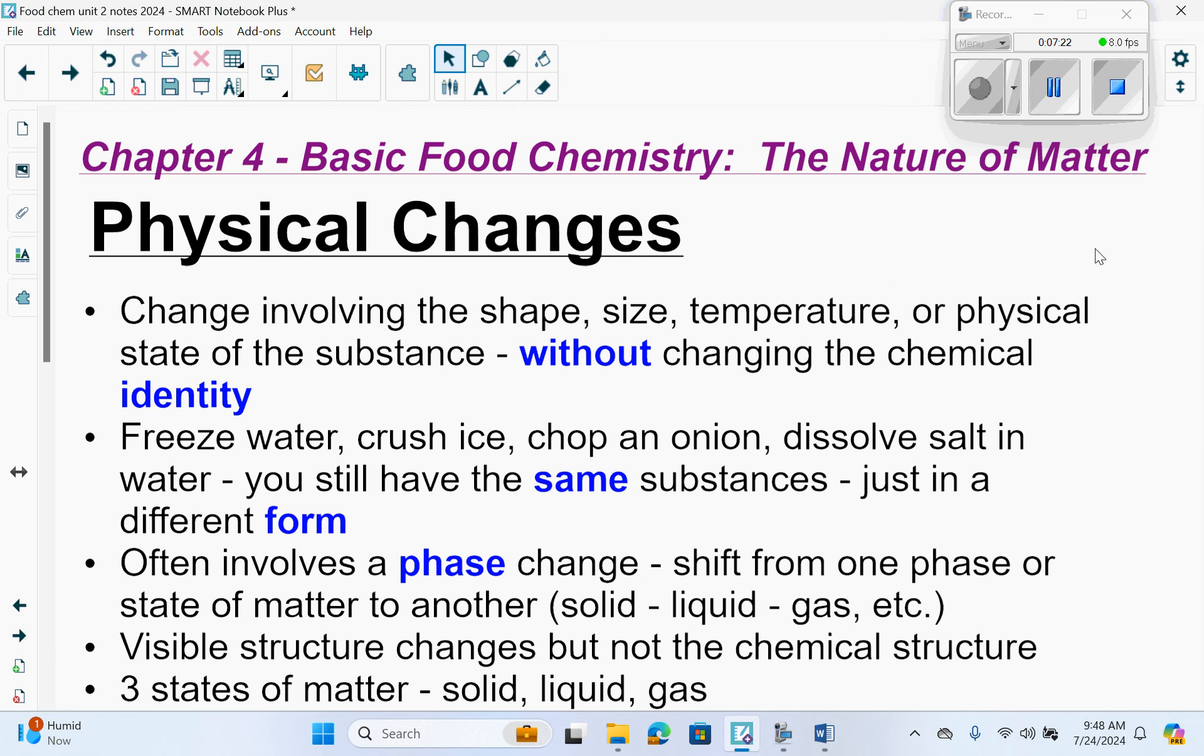Now we jump back to Chapter 4, which looks at basic food chemistry and the nature of matter. We looked at matter itself and what it's made of. Now we're going to look at some changes. There are two basic types: physical and chemical. This might sound familiar from chemistry class, but we're going to go over it anyway.